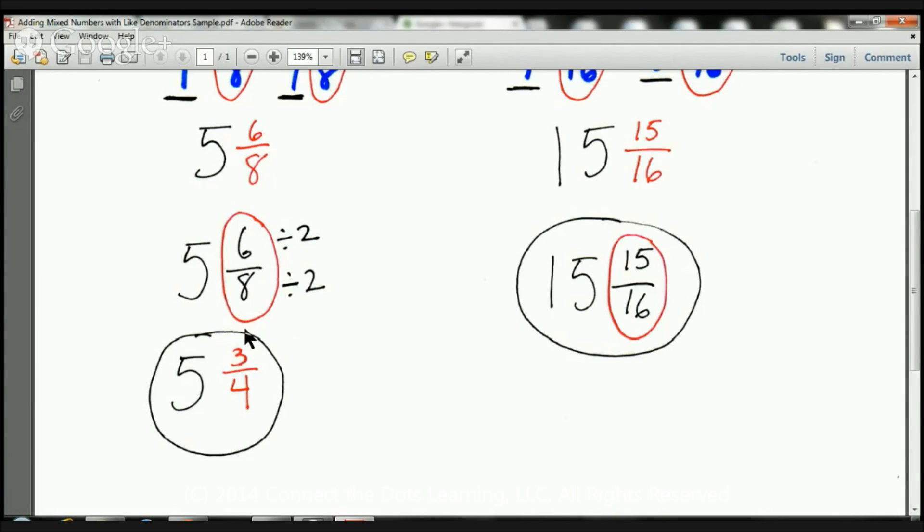But in this case they're going to be divided by 2. So 6 divided by 2 is going to be 3, and 8 divided by 2 is going to be 4. In this instance I'm going to reduce this fraction here to 3 fourths and I'm going to bring this number down which is a 5. So the answer is 5 and 3 fourths. And that's it, pretty easy right?